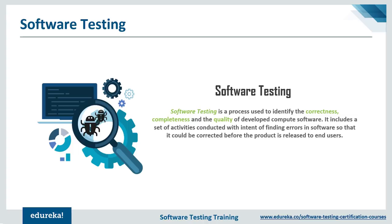Every system has software bugs — it's impossible to design a perfect software product. The world itself is imprecise and unpredictable, and all software systems connect to the real world in one way or another. Some bugs may lie dormant, some may occasionally arise without serious consequences, while others when active have caused disasters. They can be expensive, costing companies billions of dollars in repairs, lawsuits, and lost sales.